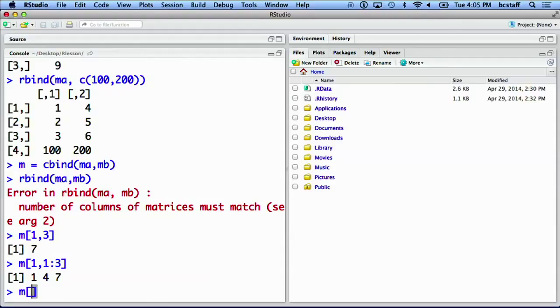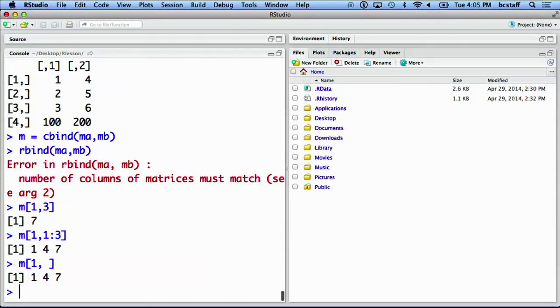Here, instead of typing one through three column, I simply leave the second argument empty, and we get the first row.